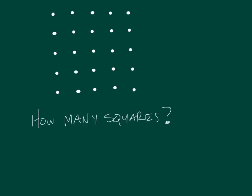How many squares can be formed in the picture? So, what's the overall strategy? 25 little ones.